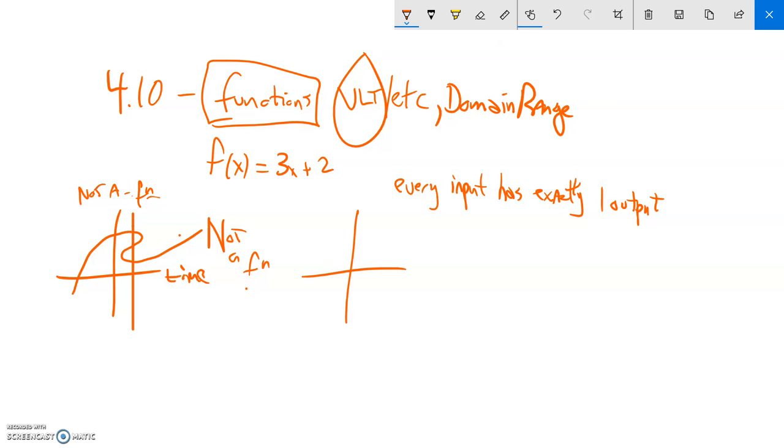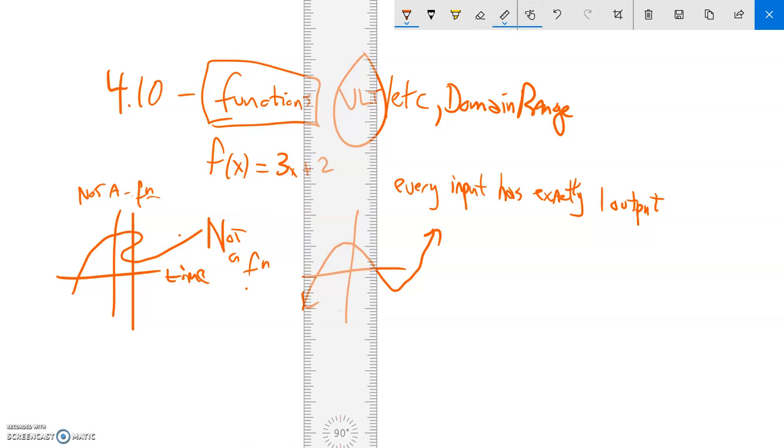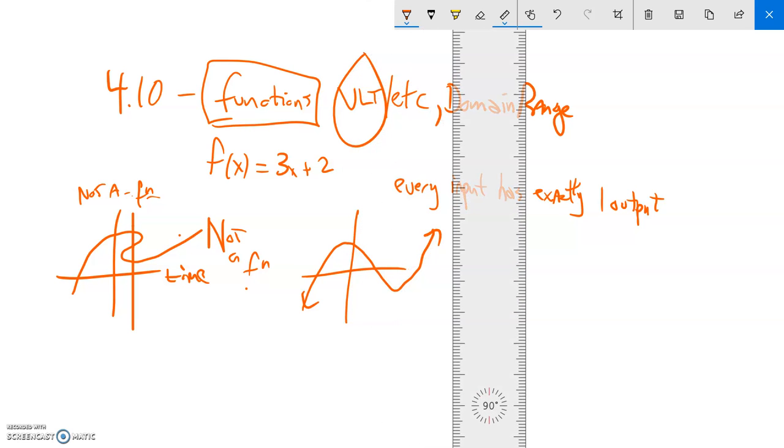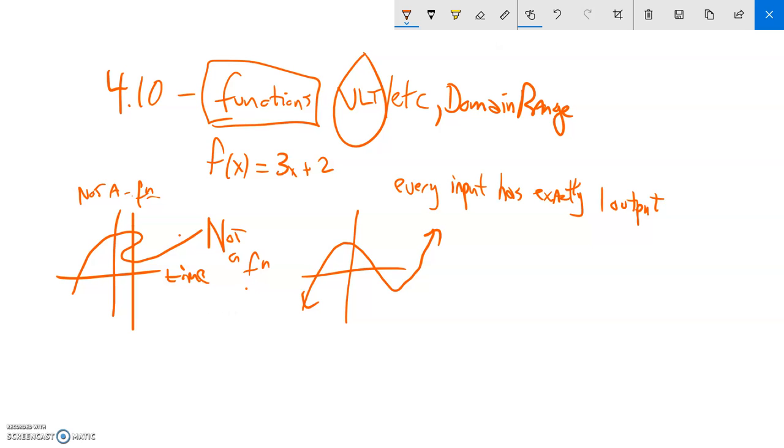So if I had a graph that looks like this, if I vertical line test that thing, it only gets touched once the whole time as I go along it. So that is sufficient evidence that it is a function.